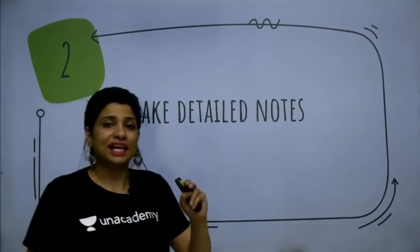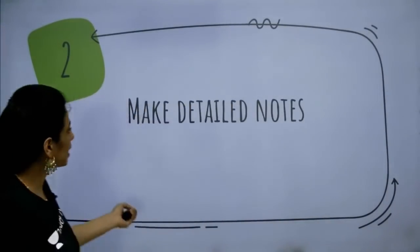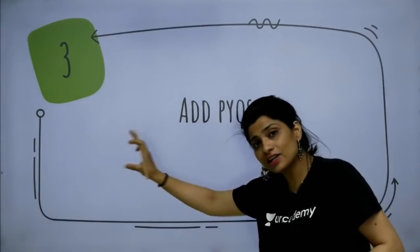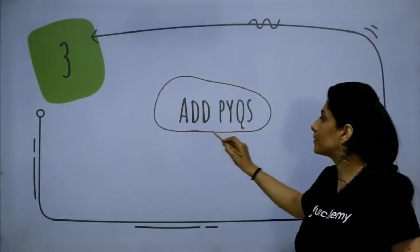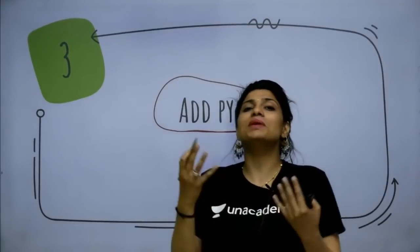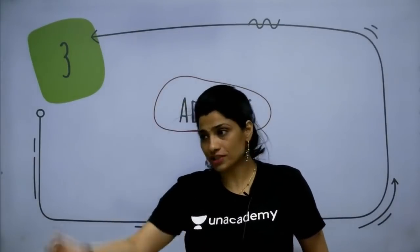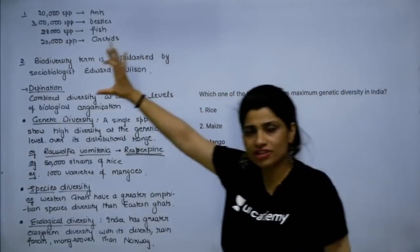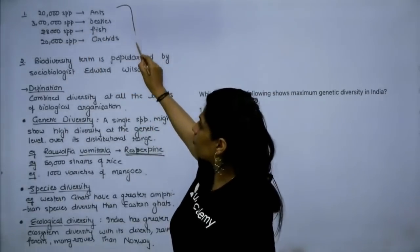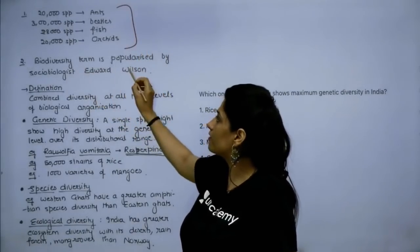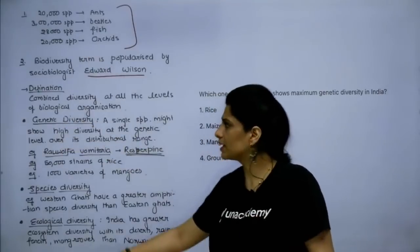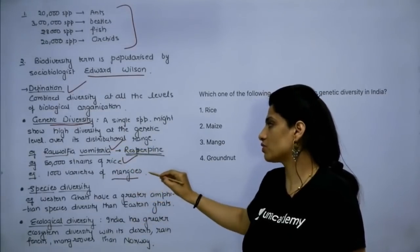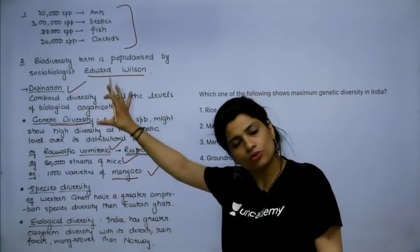Once you have made a mind map, you will start making detailed notes. In those detailed notes, include examples such as Wolfia vomitoria, 50,000 strains of rice, and 1,000 varieties of mangoes. Cover genetic diversity, species diversity, and ecological diversity.